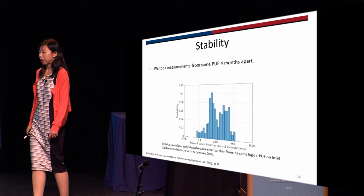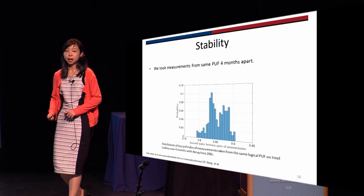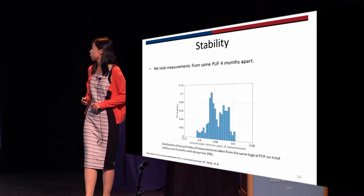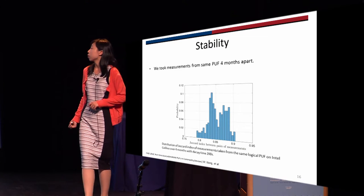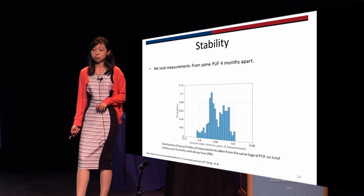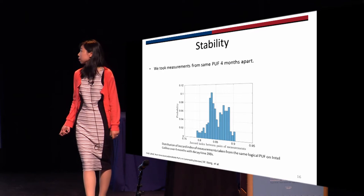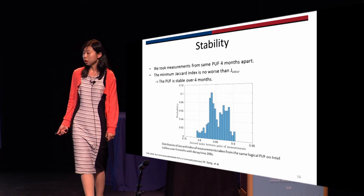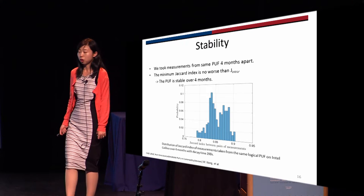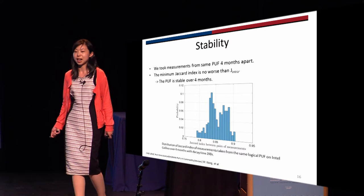We also evaluate stability. We took measurements from the same logical PUF four months apart and looked at the Jaccard index. We find that the worst case is around 0.8, which means the measurements four months apart are quite similar to each other. So we can conclude that the PUF is stable over four months, and we expect it can be stable for a longer time.